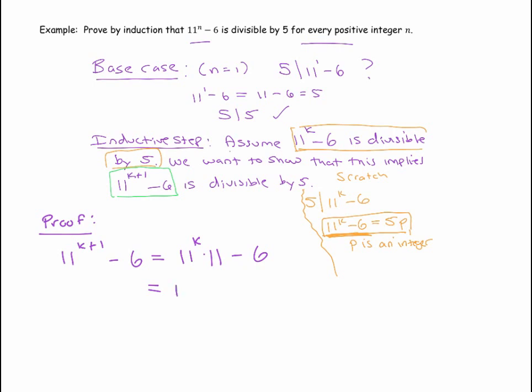So what I'm going to do is I'm going to put 11 to the k, I'm going to put a minus 6 there, with this times 11 out there in front, and then a minus 6. Now, I've changed this expression, so I can't possibly leave it like this and continue on.